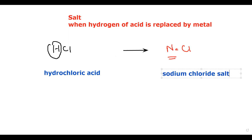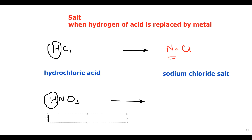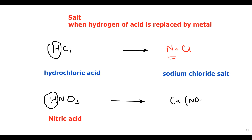Another example: HNO3 is known as nitric acid. But if this hydrogen is replaced by a metal — for example, calcium, which is in group two — calcium has a charge of +2 and nitrate is -1, so the formula for calcium nitrate will be Ca(NO3)2. As you can see, instead of hydrogen we have a metal, so we call this calcium nitrate.